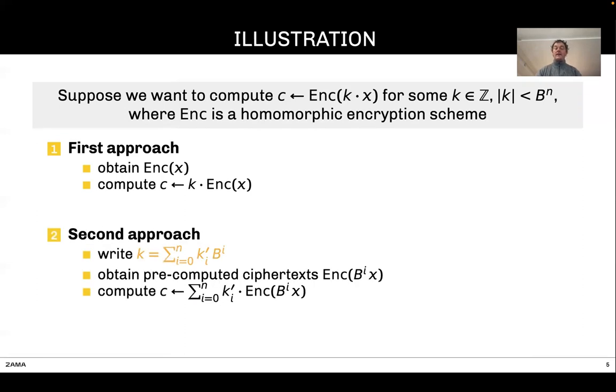But there is another way. Instead, what you could do is first decompose k, the scalar. Then you obtain all the ciphertexts of B^i times x, where B is the radix used for the decomposition. Then you combine all the ciphertexts: you compute a multi-sum and the weights are the digits of the decomposition. That will also give you the encryption of k times x.